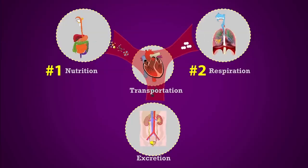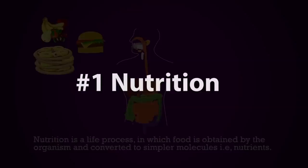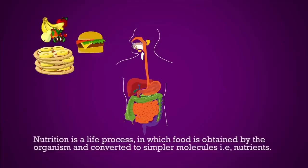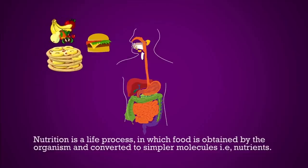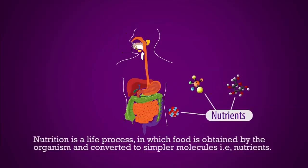They are: 1. Nutrition, 2. Respiration, 3. Transportation, and 4. Excretion. Nutrition is a life process by which organisms are able to obtain their food and can convert that food into nutrients. These nutrients help the organisms in their growth and repair and maintenance of their bodies.